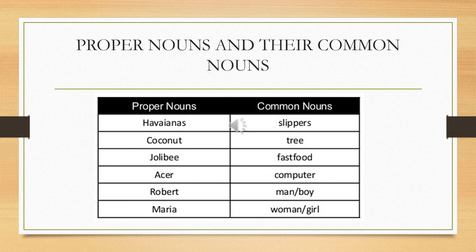Now let us have a look at some proper nouns and their common nouns. Havenas — its common noun is Slippers. Coconut — its common noun is Tree. Jelly Bee — its common noun is Fast Food. Acer — its common noun is Computer. Robert — its common noun is Man or Boy. Maria — its common noun is Woman or Girl.